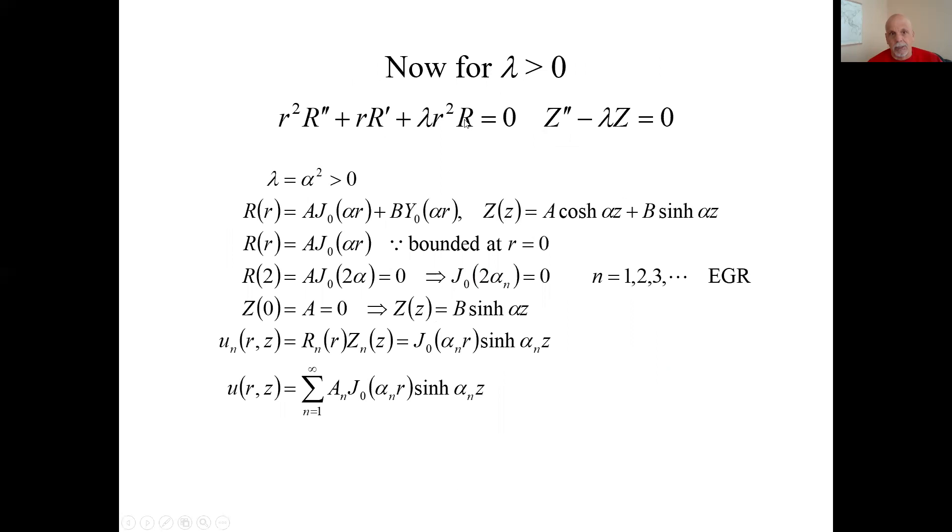So let's look at the positive lambda case. Then we'll get the normal Bessel equation. It has this general solution. Corresponding Z solutions will be hyperbolic sine and hyperbolic cosine. Boundedness, it's got to be bounded at r equals zero. And this guy doesn't do that. So we set B to zero. This is our surviving R function. And at the argument of two, it equals this, that has to equal zero. And that gives us our eigenvalue generating relationship.